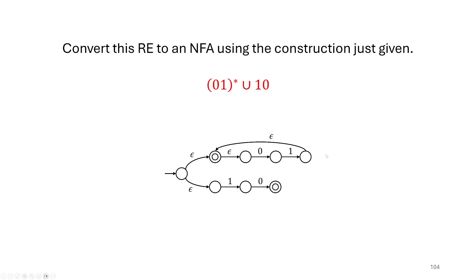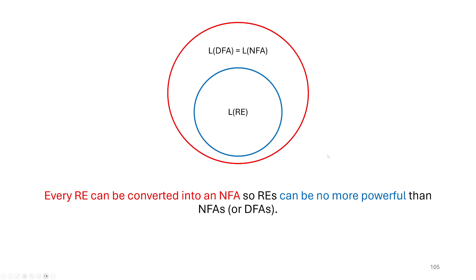The takeaway from that proof and construction is that if you have a regular expression then it is at most as powerful as NFAs or DFAs. Anytime you have a regular expression you can build an NFA for it. But are there NFAs that do not have corresponding regular expressions? We know regular expressions are not more powerful than NFAs and DFAs, but it's possible that NFAs and DFAs are more powerful than regular expressions — spoiler alert: they are not, and we're going to demonstrate that now.